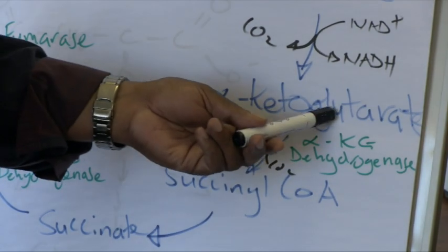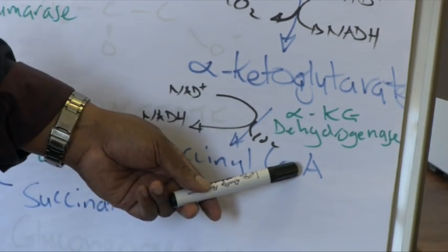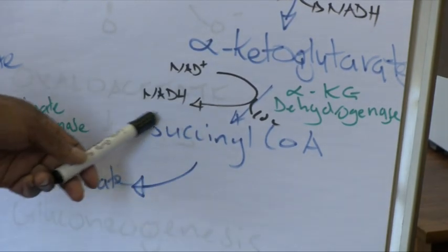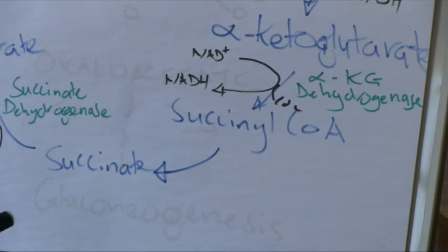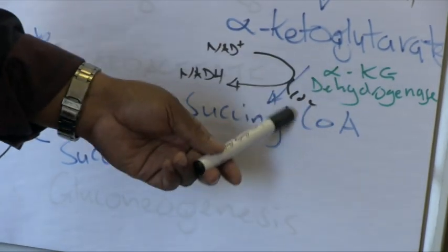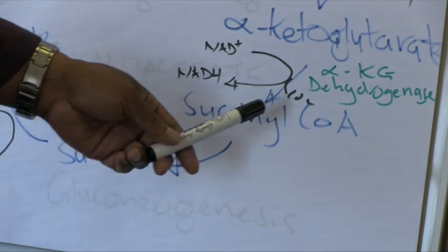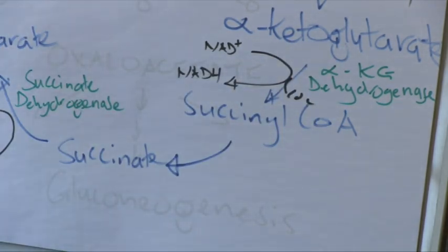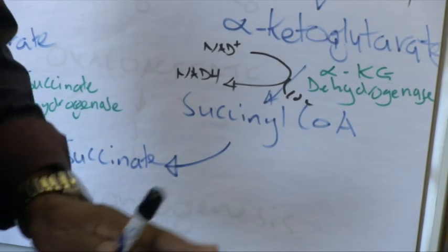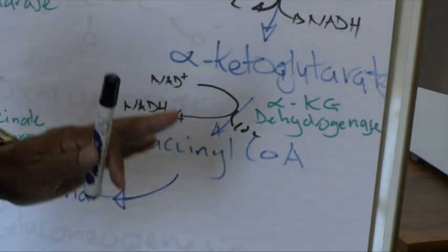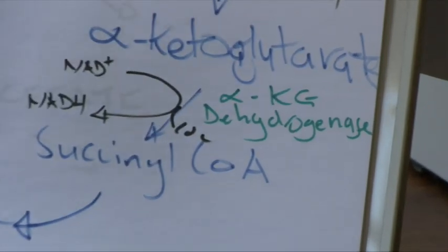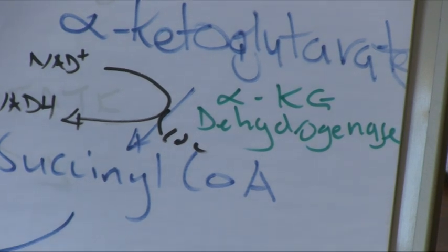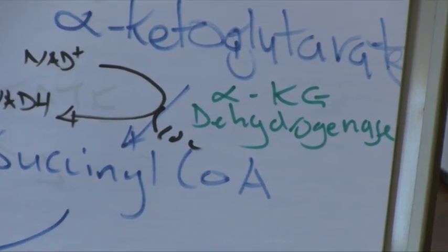Alpha-ketoglutarate is converted to succinyl coenzyme A in the next step, with the formation again of NADH and another decarboxylation reaction. This conversion is carried out by an enzyme called alpha-ketoglutarate dehydrogenase. Please remember the name of this enzyme — it is also dependent on the vitamin thiamine. So we've now dealt with two enzymes that are thiamine-dependent: pyruvate dehydrogenase and alpha-ketoglutarate dehydrogenase.